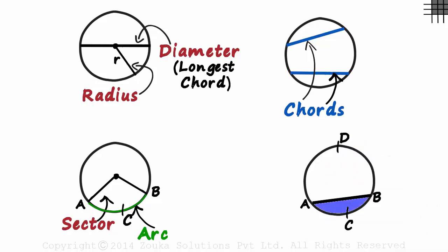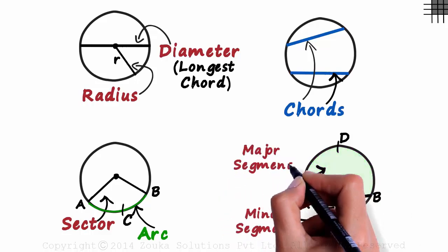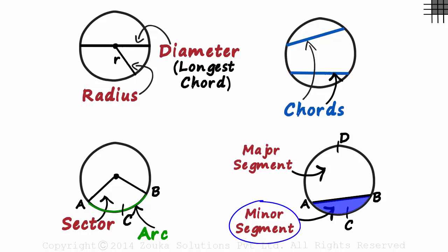As this region formed by the chord is smaller, it's called the minor segment. And you would have guessed already that the other region is called the major segment. Segment ACB is minor and segment ADB is major.